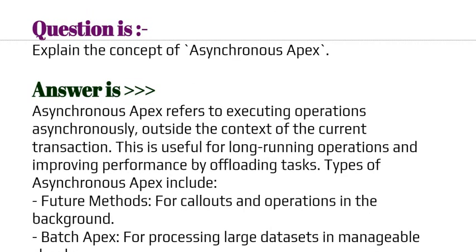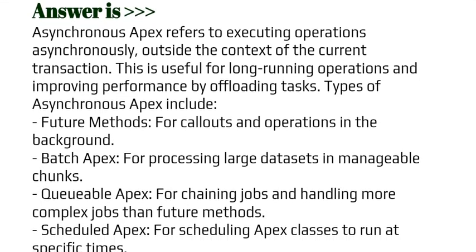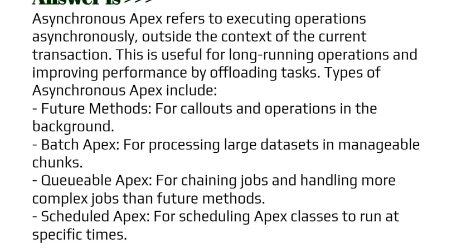Our next question is: explain the concept of asynchronous Apex. Asynchronous Apex refers to executing operations asynchronously outside the context of the current transaction. It is helpful for long-running operations and improving performance by offloading tasks. Types of asynchronous Apex include: future methods for callouts and background operations; batch Apex for processing large data sets in manageable chunks; queueable Apex for chaining jobs and handling more complex jobs than future methods; and scheduled Apex for scheduling Apex classes to run at specific times.